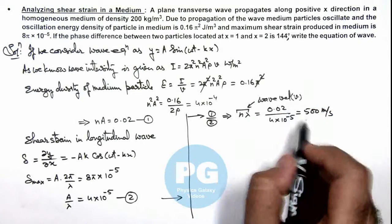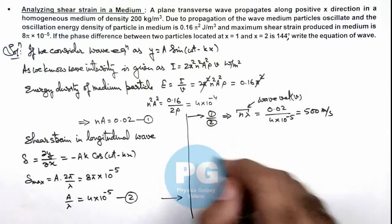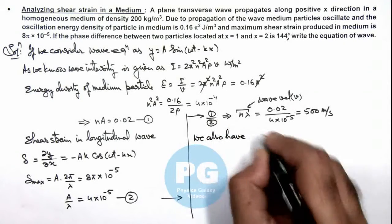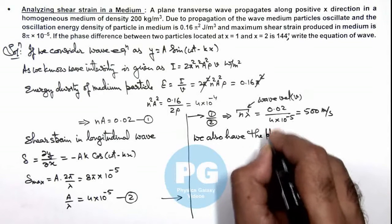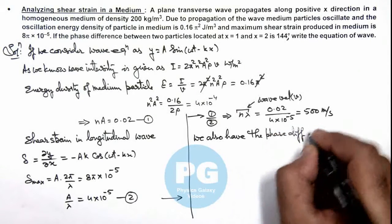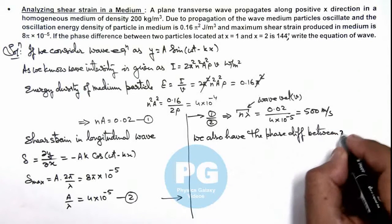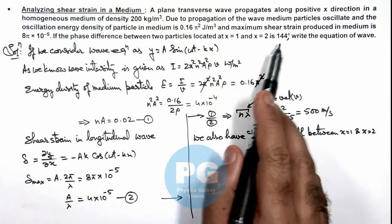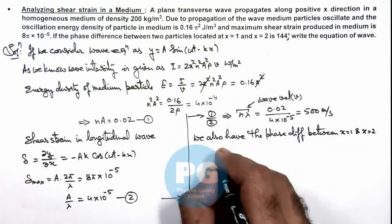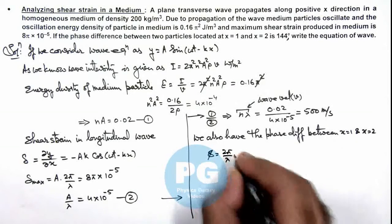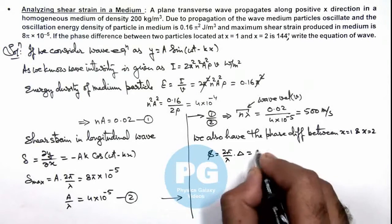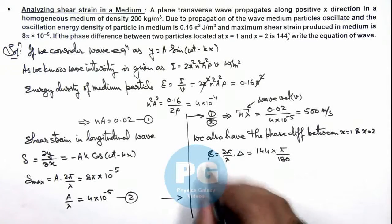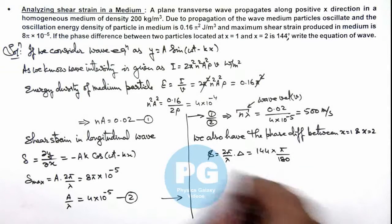So as we have got the wave velocity, correspondingly we can calculate the rest of the terms. We also have the phase difference between x equal to 1 and x equal to 2, which is given as 144 degrees. So this can be given as phase difference as 2π/λ multiplied by the path difference delta, which is 144 × π/180, as we always consider the numerical phase difference in radians while calculating numerical values.